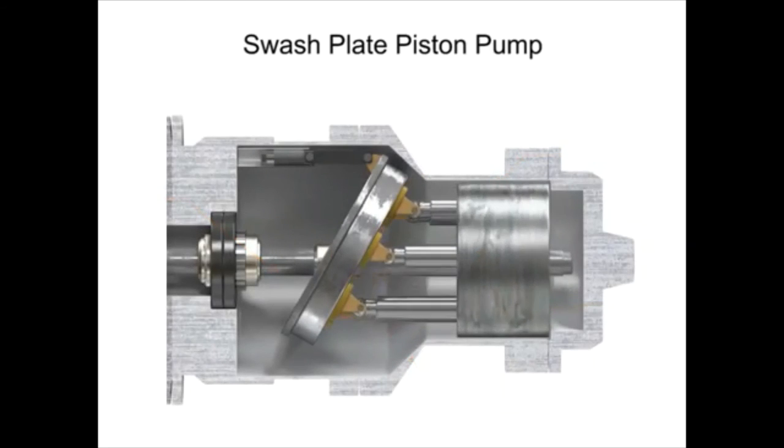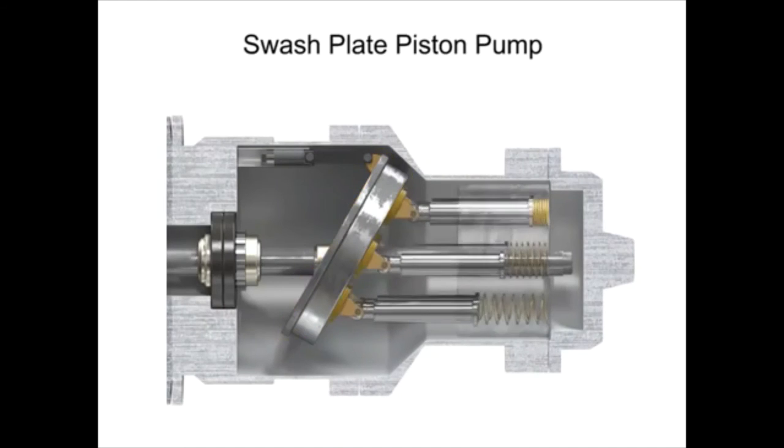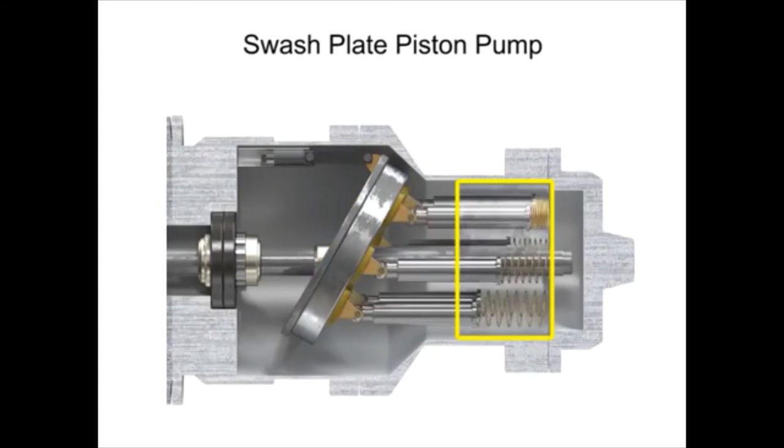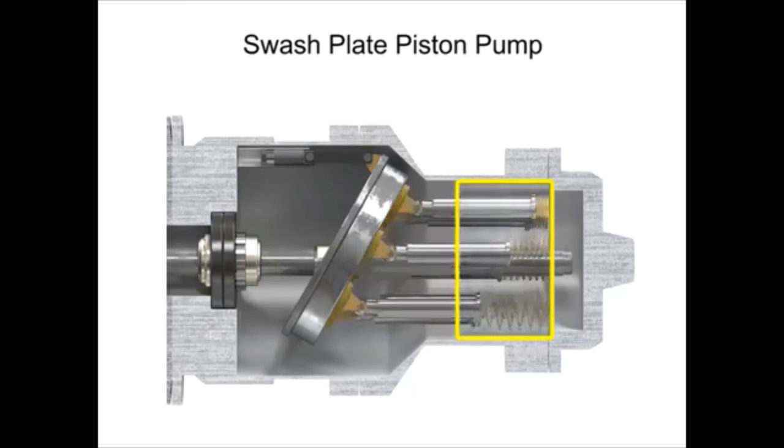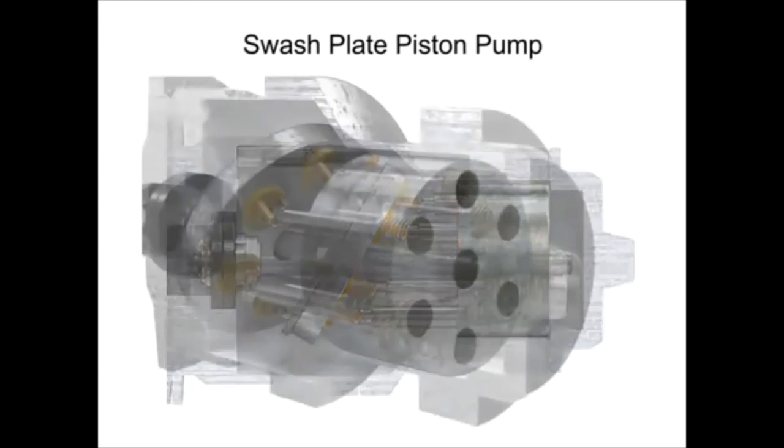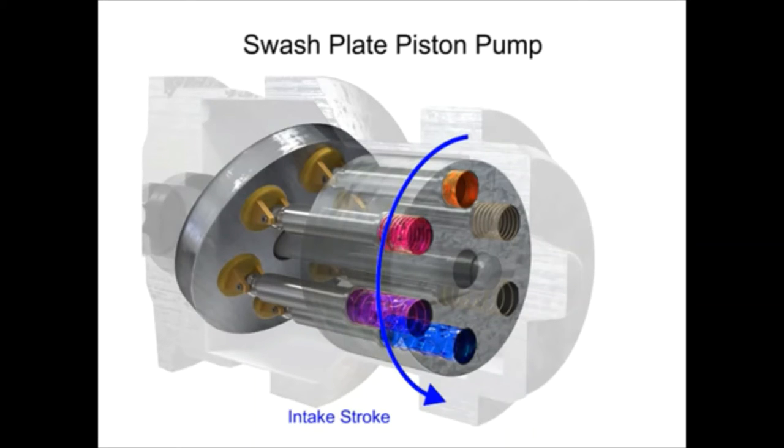As the shaft rotates, the pistons move against the swashplate, causing them to reciprocate within the piston block. The pistons create a vacuum that forces fluid in during half a revolution and expels fluid during the other half.